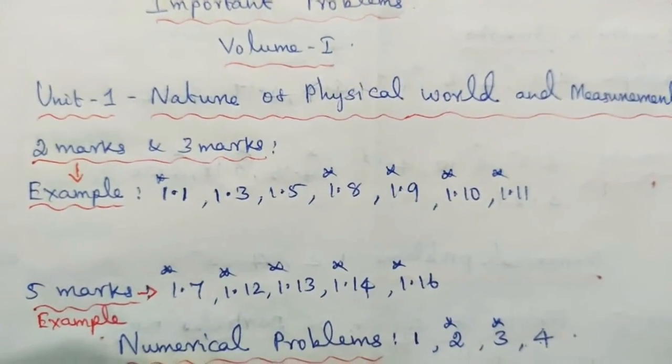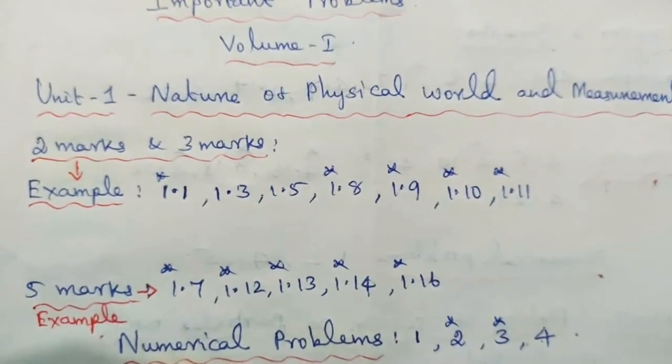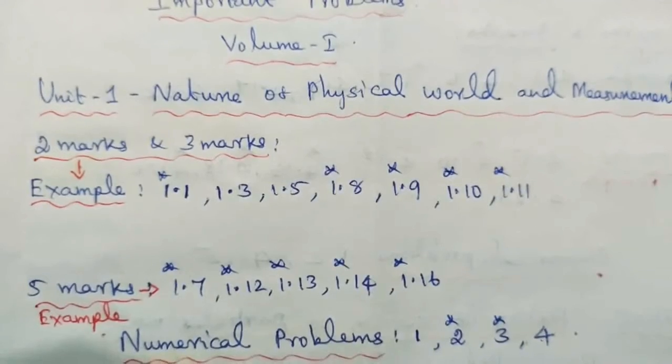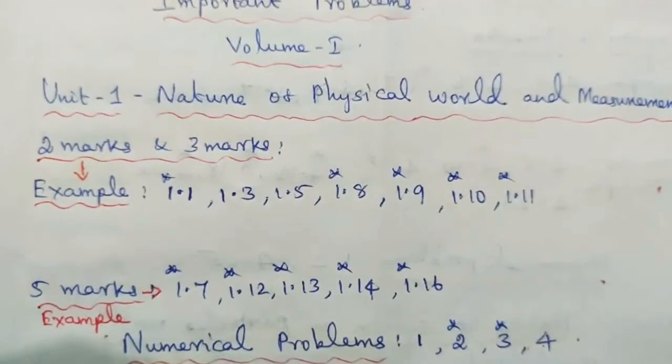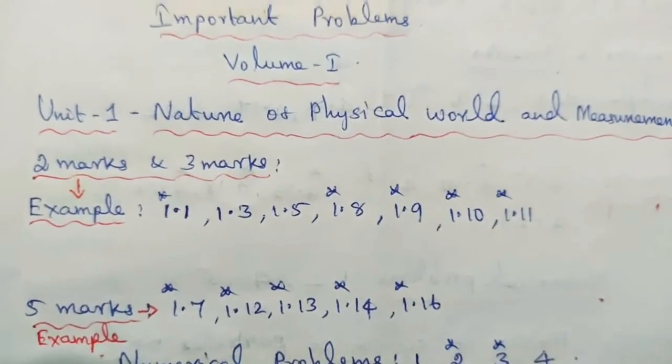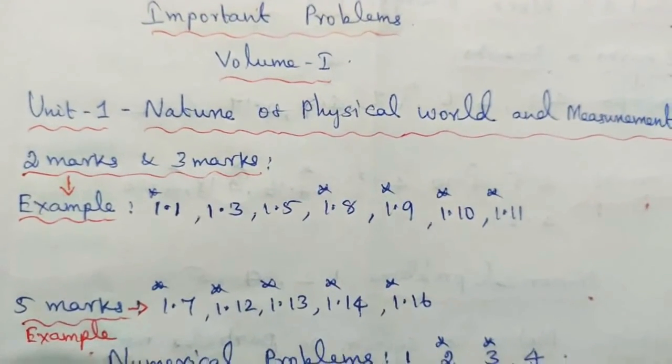5 marks examples: 1.7, 1.12, 1.13, 1.14, and 1.16.